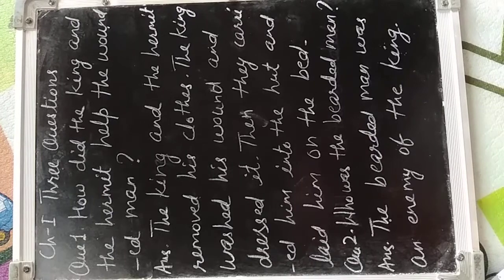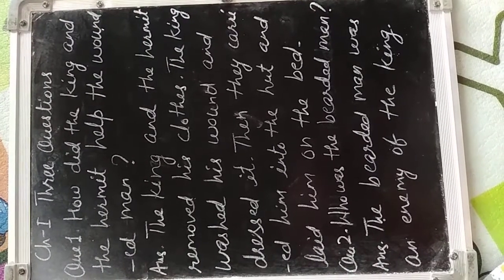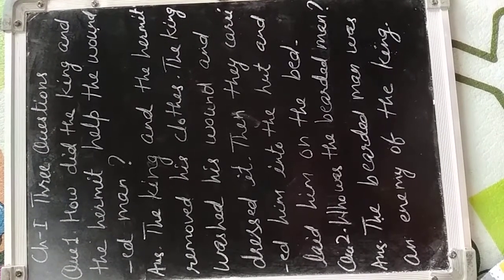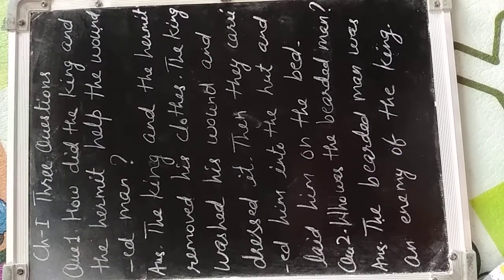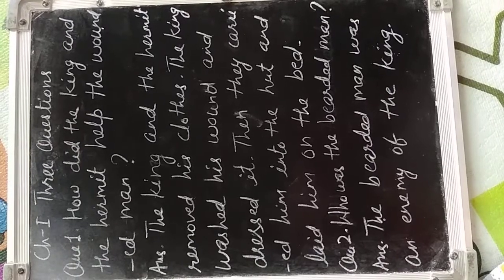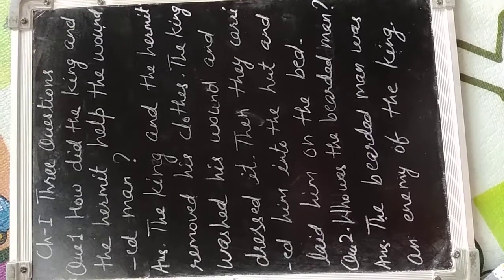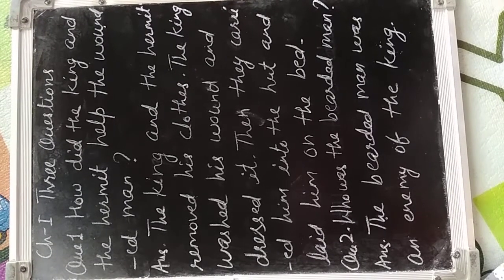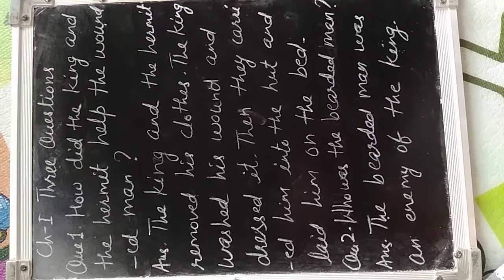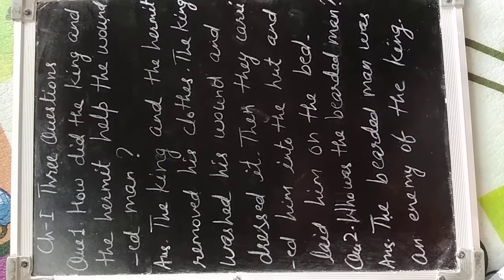The answer is: the king and the hermit removed his clothes. Raja aur sanyasi ne us ghail vakti ke kapdai utaray. The king washed his wound. Raja ne uske ghaav ko saaf kiya and dressed it. Aur iske upar patti bandhi. Then they carried him into the hut and laid him on the bed. Aur phir wo usko apni hut mein le gaye aur usko bistar par liita diya.